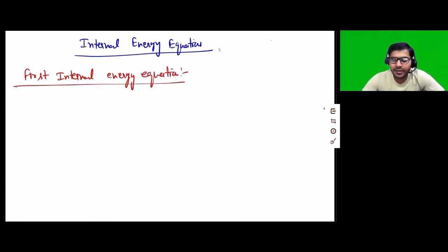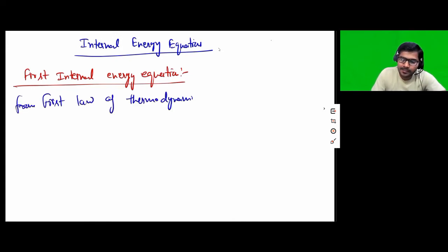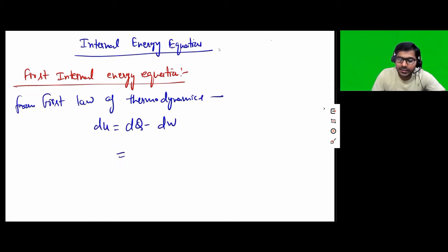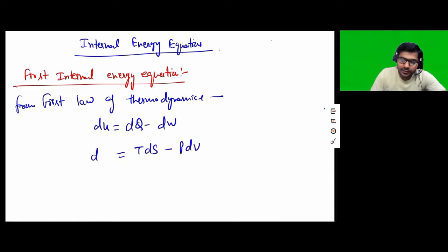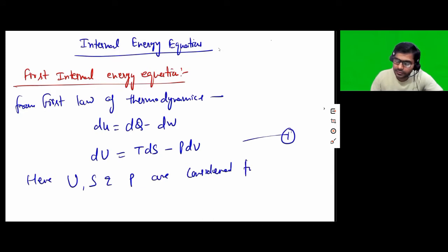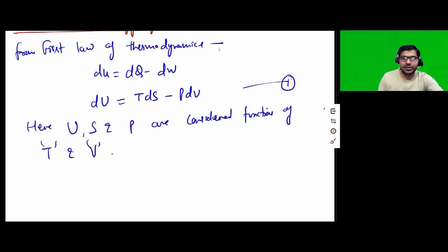We are already familiar with the first law of thermodynamics, which is dU equal to dQ minus dW, where dQ is TdS from the second law of thermodynamics and dW is PdV. U, S, and P are considered functions of T and V — temperature and volume. U is the internal energy, S is the entropy, P is the pressure, V is the volume.